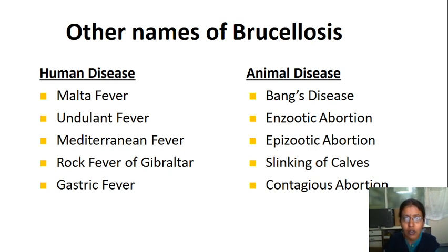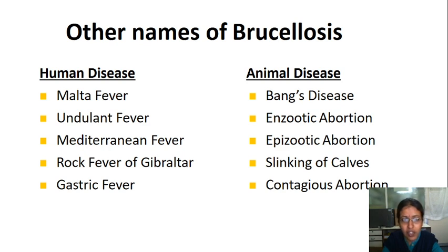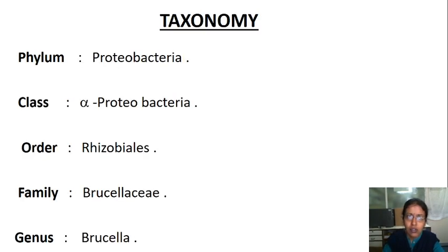Brucellosis has several other names. When it causes disease in humans it is known as Malta fever, undulant fever, Mediterranean fever, gastric fever, or Rock fever of Gibraltar. When it causes disease in animals it is called Bang's disease or enzootic abortion. It is most commonly known as Malta fever because it was discovered in Malta by British medical officers around the 1850s during the Crimean War.